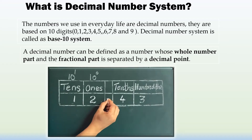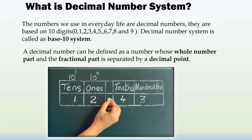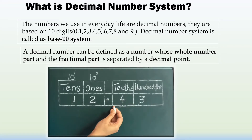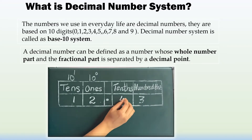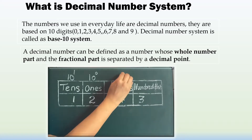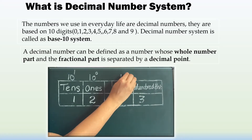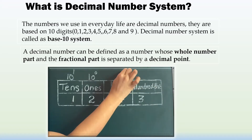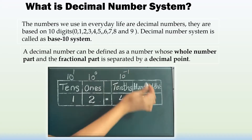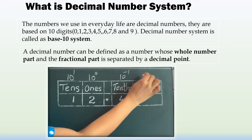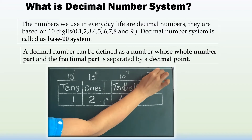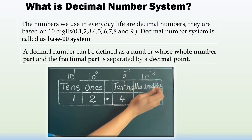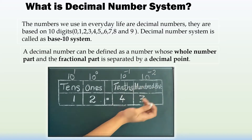Following the decimal point, the place value of each digit changes: this digit 4 has a place value of 10 to the power of negative 1, and this digit 3 has a place value of 10 to the power of negative 2, which corresponds to the hundredths place.